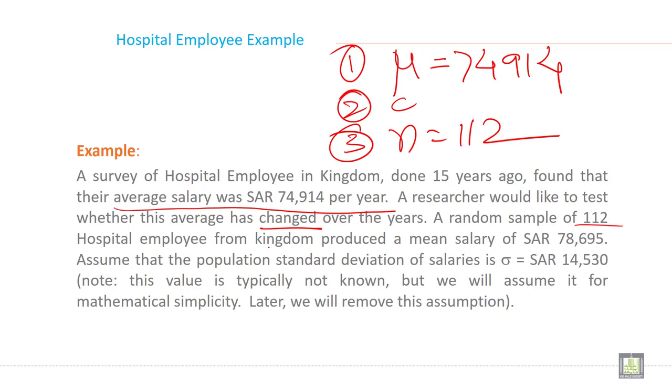Then the sample has produced a salary of 78,000. Then fourth information is given X bar is equal to 78,695. This is fourth information.